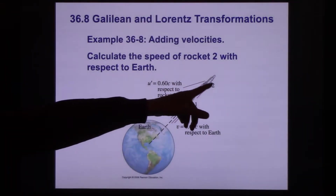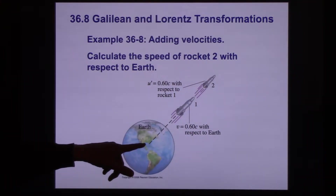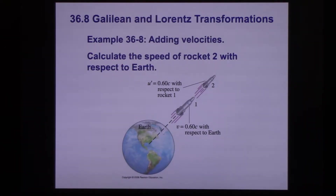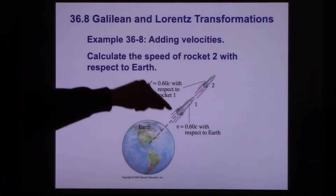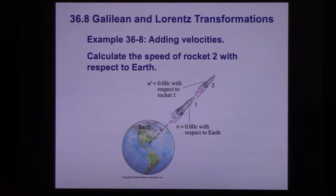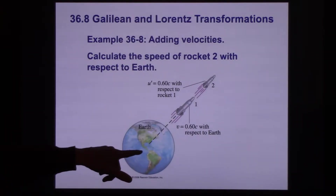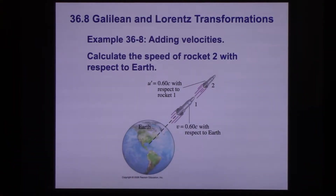How fast is rocket two moving relative to the Earth? You're thinking you don't need a calculator — just add those two velocities together. But it doesn't work. Point six C plus point six C would add up to 1.2c, and we know that in the reference frame of the Earth nothing could ever be measured traveling faster than c. Space and time are structured in a way where we'll never measure something traveling faster than c.